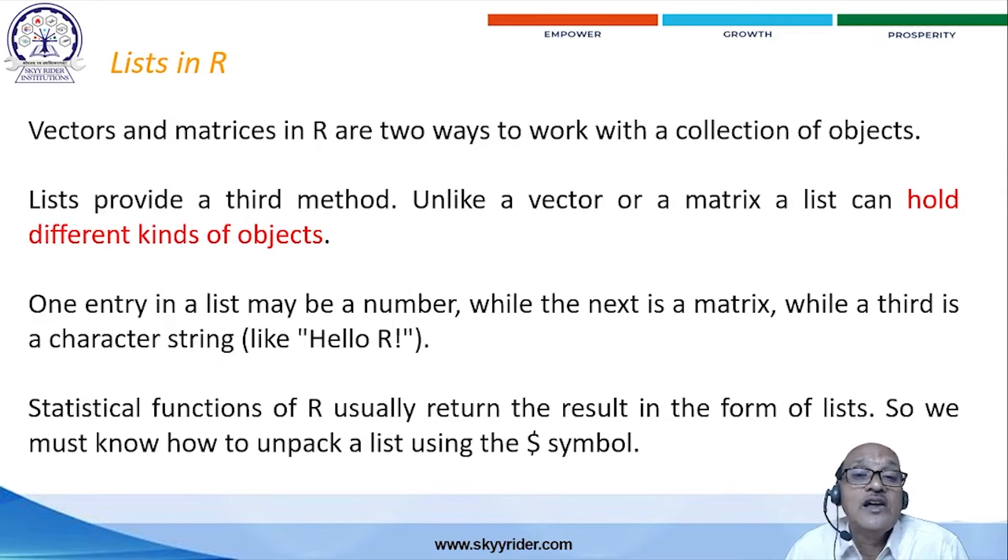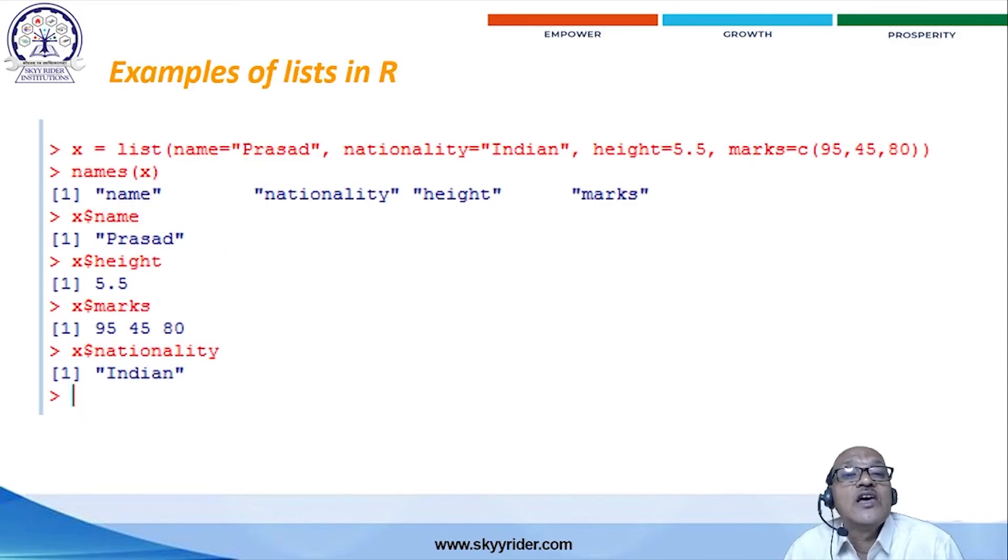And fourth one is the list. This is one type of data structure. That means vector and matrices are in two ways to work with the collection of objects. List provides the third method. Unlike vector and matrices which can go into different kinds of objects.